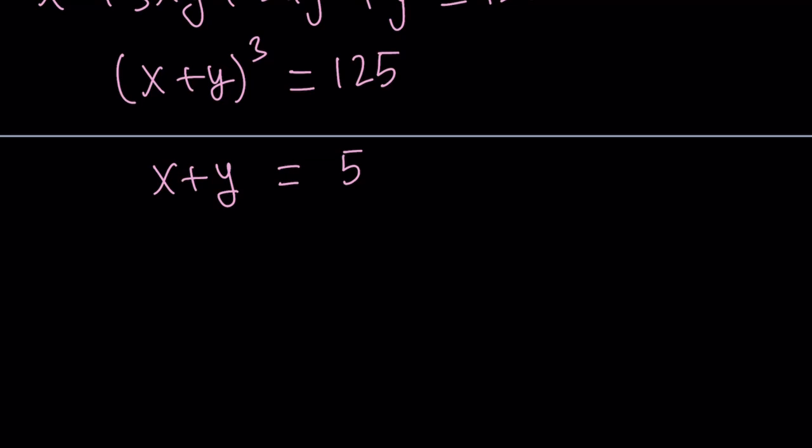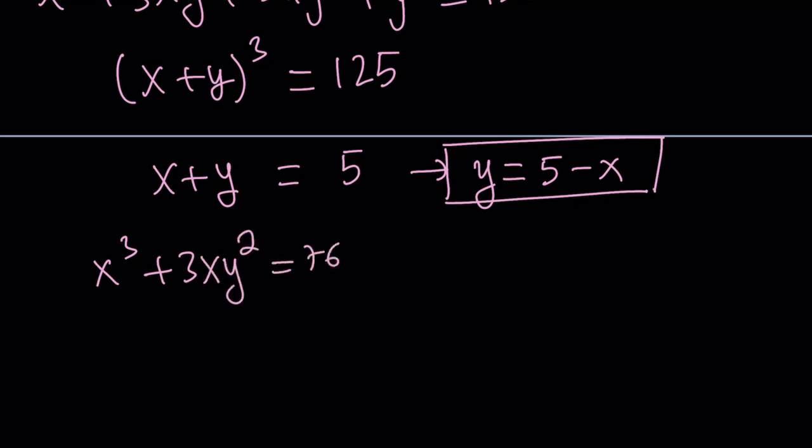From here, we can isolate one of the variables, say y, and write it as 5 minus x, and then substitute this in one of the equations. To remind you what the original equations are, we had x cubed plus 3xy squared equals 76, and y cubed plus 3x squared y equals 49.